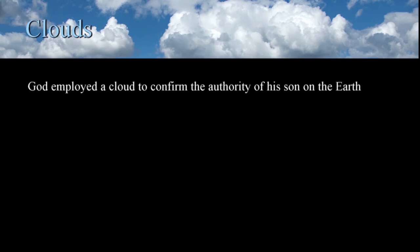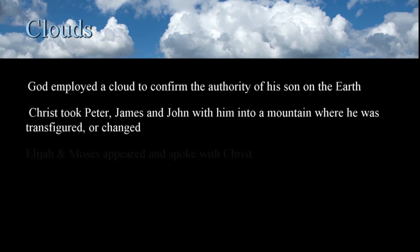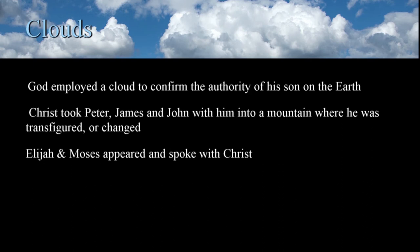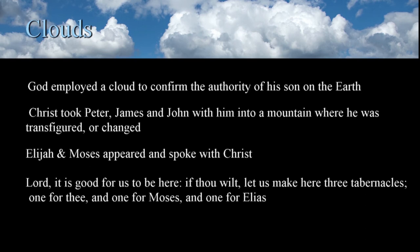God employed a cloud to confirm the authority of his Son on the earth. Christ took Peter, James, and John with him into a mountain where he was transfigured or changed. Along with Christ, Elijah and Moses appeared and spoke with him. Seeing this, Peter stated: 'Lord, it is good for us to be here. If thou wilt, let us make here three tabernacles, one for thee, and one for Moses, and one for Elias' — Matthew 17:4. On the surface, this appears to be a recognition of the significance of Christ and two great characters who had gone on before. In his attempt to reverence all three, Peter made the mistake of placing Christ on an equal plane with both Elijah and Moses.